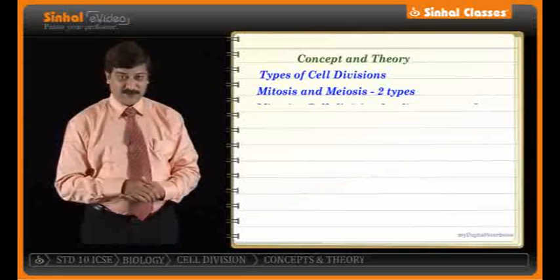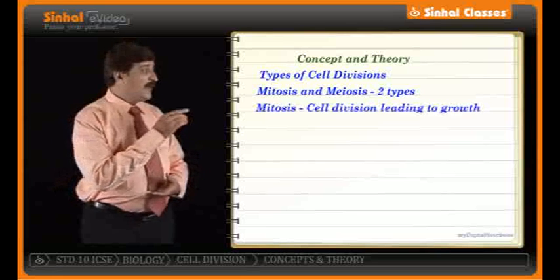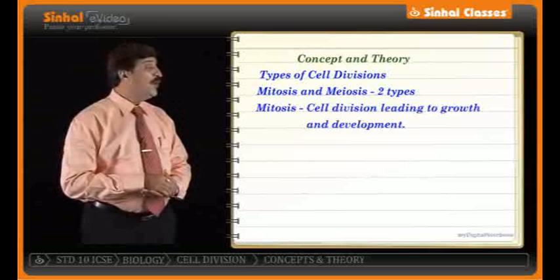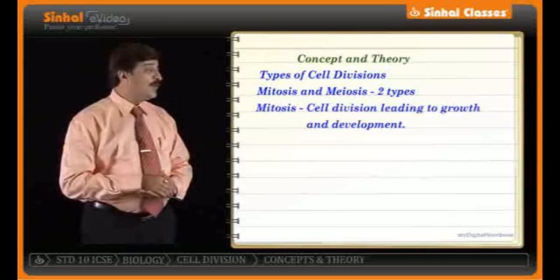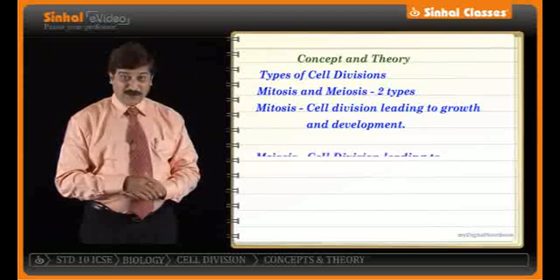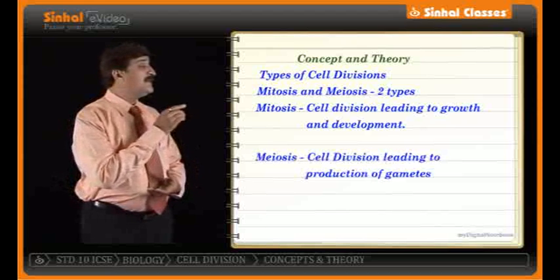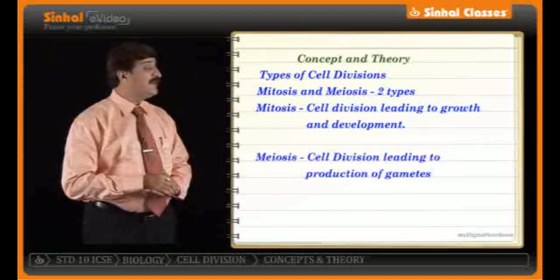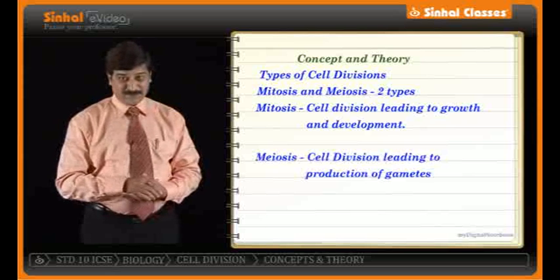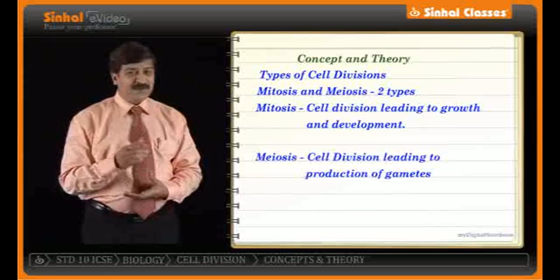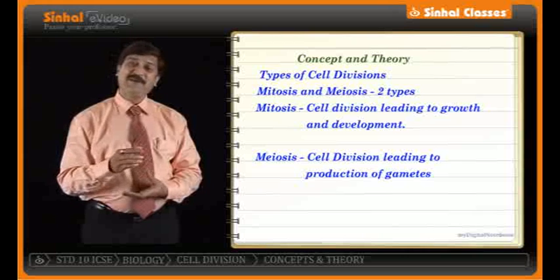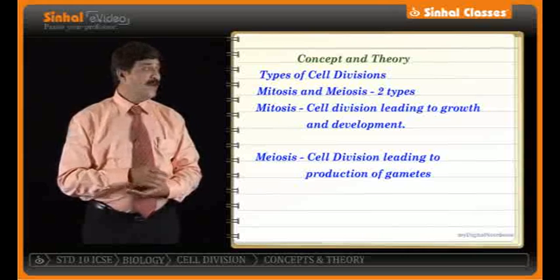Mitosis is cell division leading to growth and development. Meiosis is cell division leading to the production of gametes. When we use the word gametes, it refers to the reproductive cell.